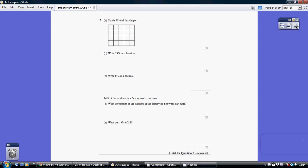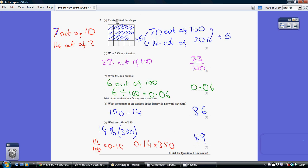Question 7. So we've got to shade 70% of this shape. 70% is 70 out of 100, or if you like, 7 out of 10.